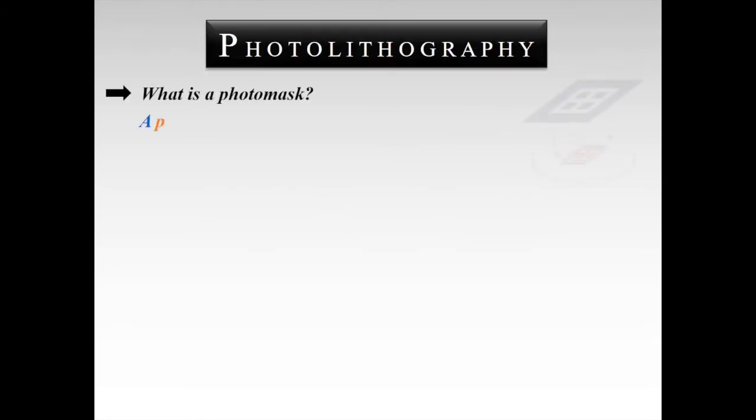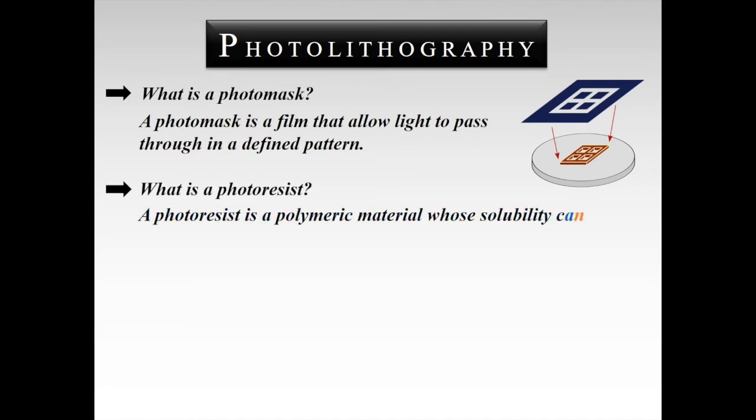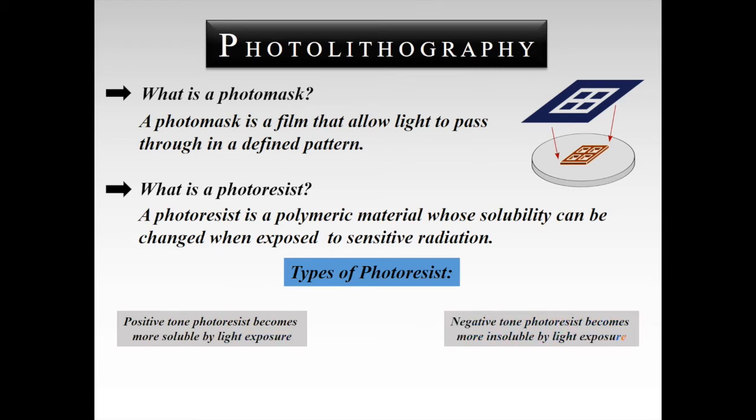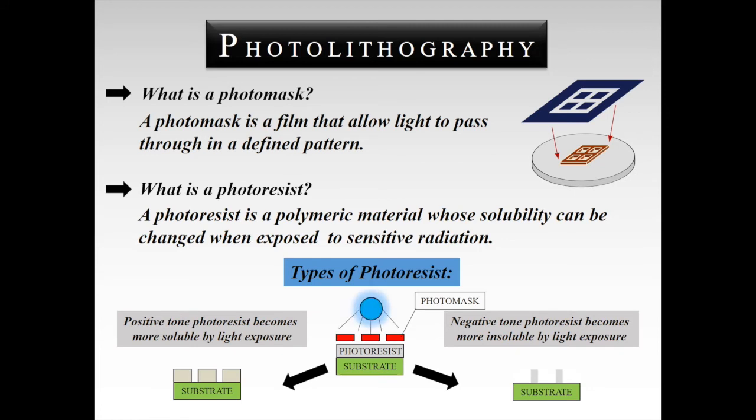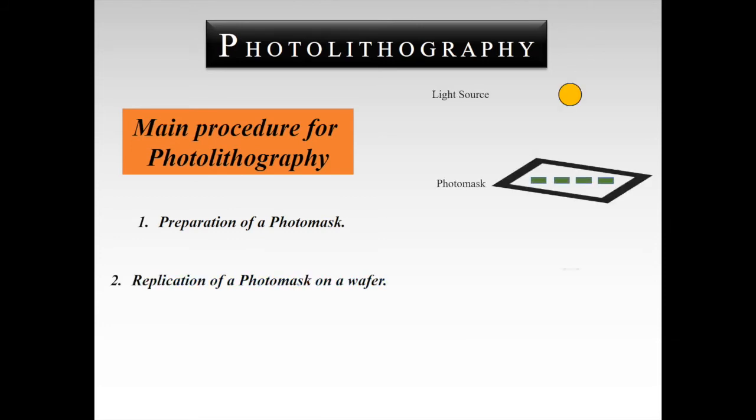A photomask is an opaque film containing the defined pattern which allows light to pass through it onto a surface. And a photoresist can be defined as a light-sensitive resist which changes the solubility when exposed to light. Here are two types of photoresists. Positive photoresists become more soluble when exposed to light, while negative photoresists become more insoluble when exposed to light. The main procedure of photolithography includes photomask preparation and then replacing the pattern onto a wafer.